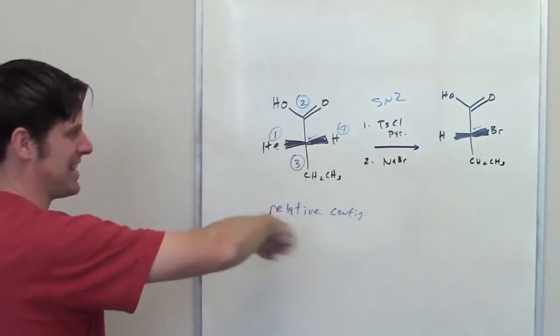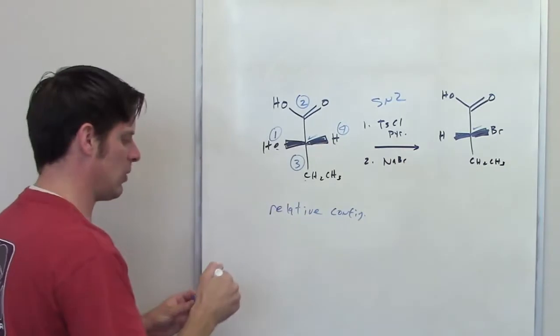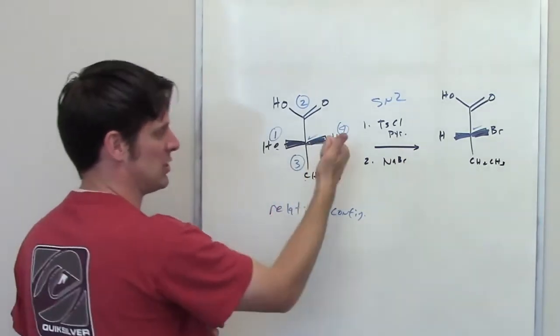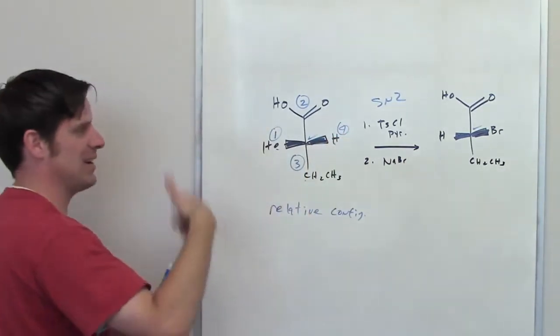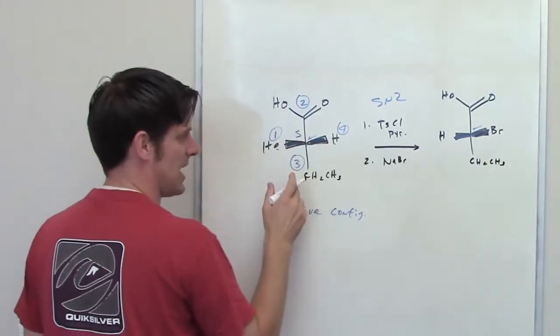I go one, two, three. That looks like it's clockwise, but keep in mind this lowest priority group is pointing towards me. So if I were on the opposite side of it, it would actually be counterclockwise, which means that it is S.